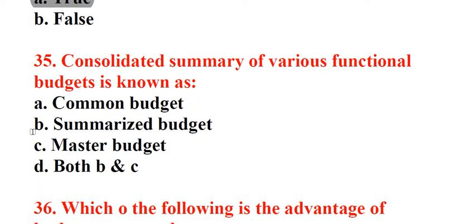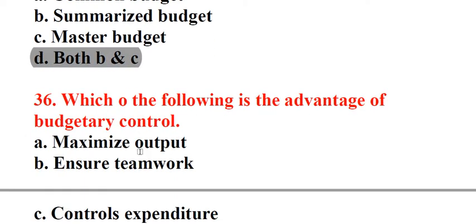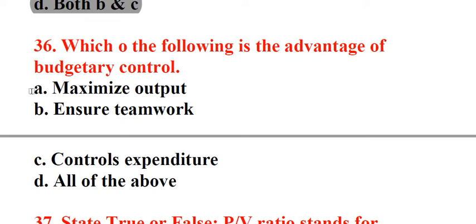Question 35: Consolidated summary of various functional budgets is known as. A. Common budget, B. Summarized budget, C. Master budget, D. Both B and C. Answer: D. Both B and C. Question 36: Which of the following is the advantage of budgetary control? A. Maximize output, B. Ensure teamwork, C. Controls expenditure, D. All of the above. Answer: D. All of the above.